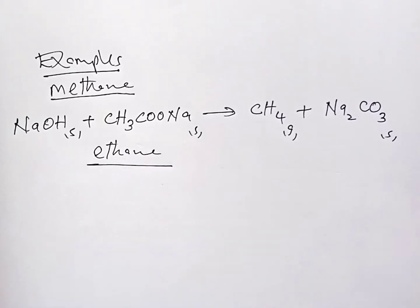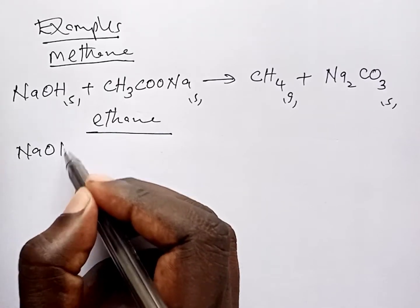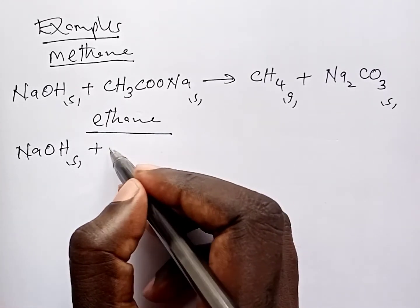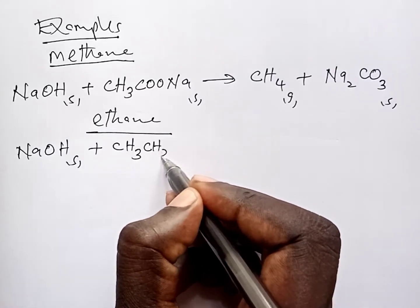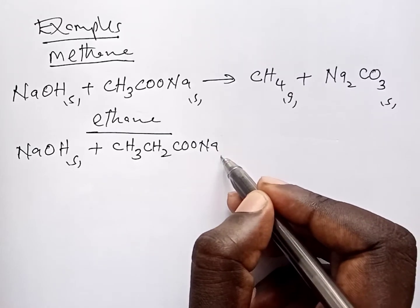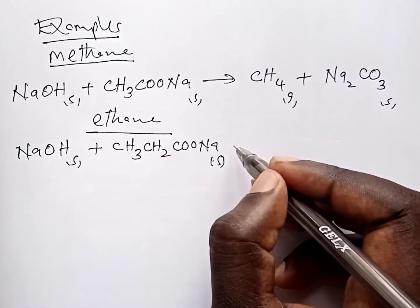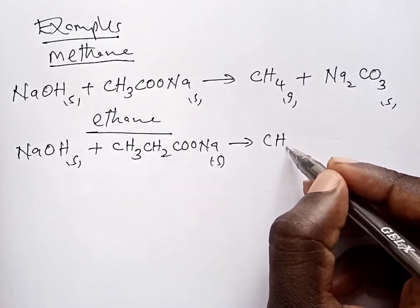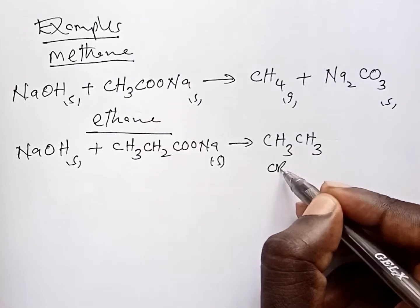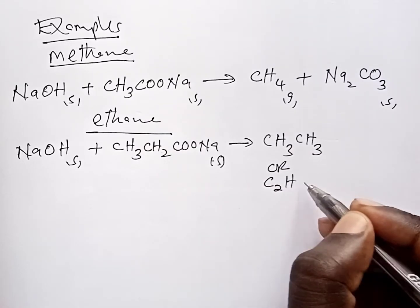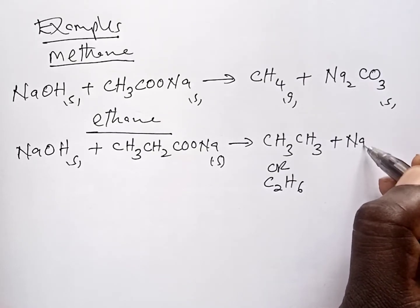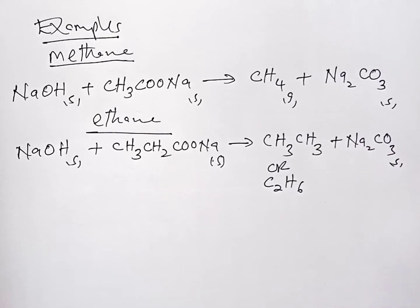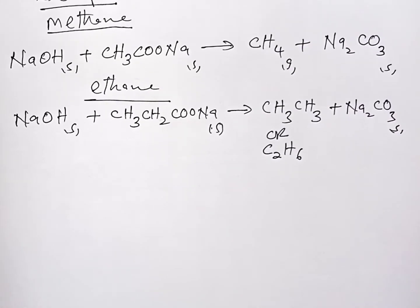For ethane, soda lime still gives sodium hydroxide, but this time I use sodium propanoate (three carbons). The products are ethane (CH3CH3 or C2H6) and sodium carbonate. This equation also balances by itself without any adjustment. We are now comfortable with lab preparation of alkanes.